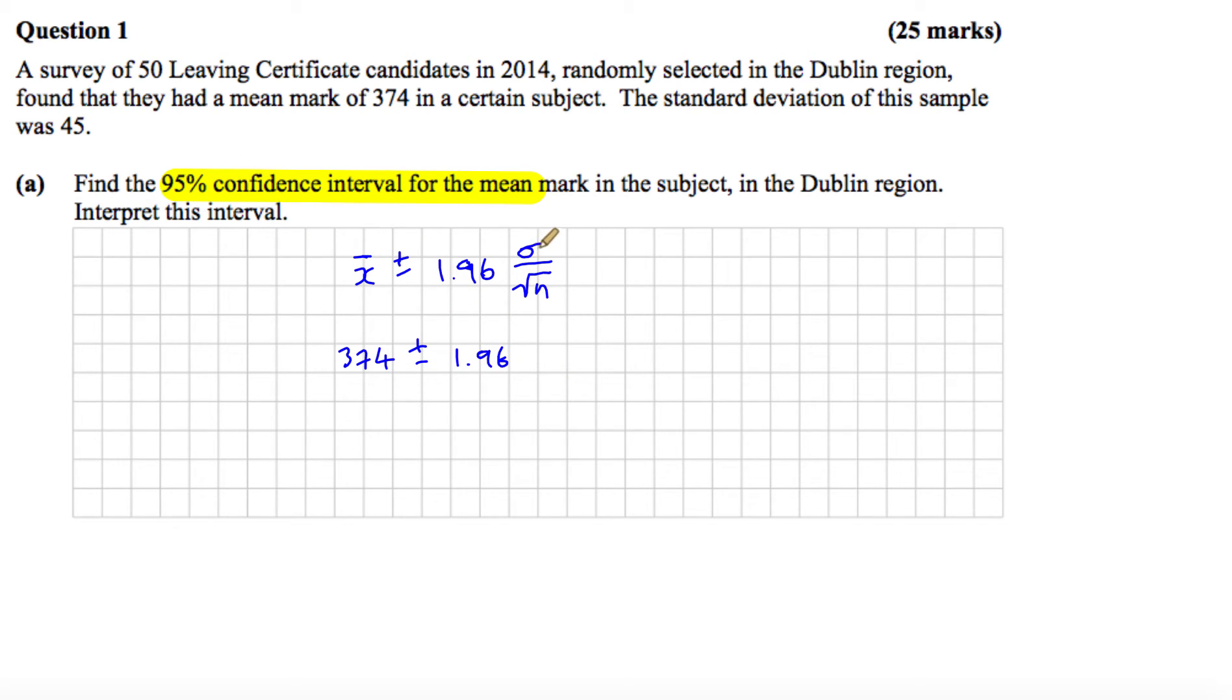Now, we don't have the standard deviation for the population here, but we do have the standard deviation of the sample. So we're allowed to use that as an approximation if we don't have the standard deviation for the population. So we can use that 45 here on top, and that's all over the square root of n, where n is the sample size. So that's the 50.